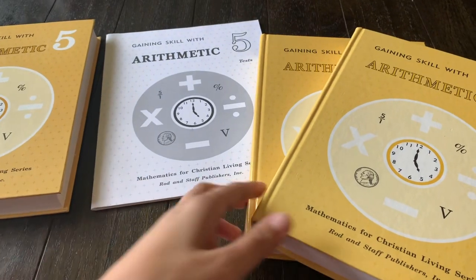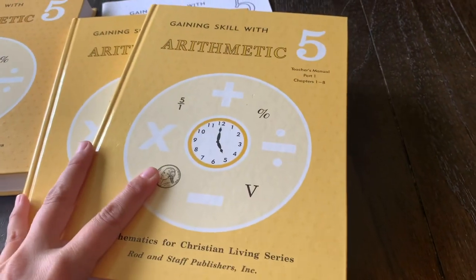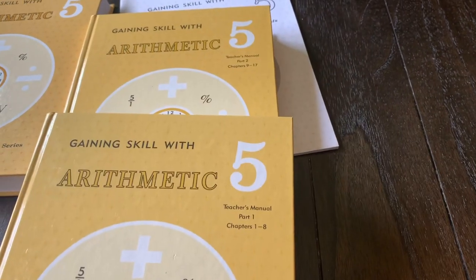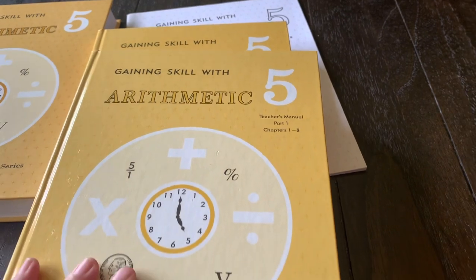You also get, when you purchase the kit, you will get two teacher's guides. There's a part one, which covers chapters one through eight, and a part two, which covers chapters nine through 17.